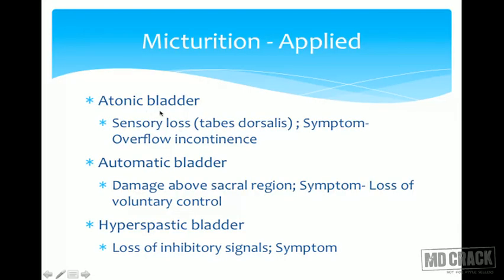An applied condition is the atonic bladder — loss of tone of the bladder. If the sensory fibers that detect stretch in the bladder are destroyed, the micturition reflex cannot be completed, and the bladder acts as a mere bag. Urine keeps filling with no reflex contraction, causing overflow incontinence — dribbling of urine due to overflow, with no actual micturition reflex.